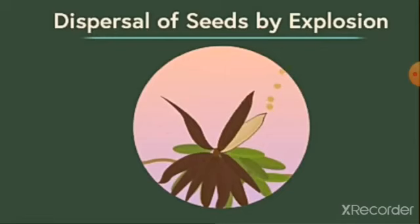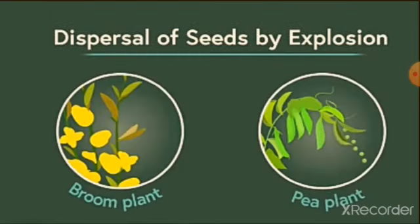The next type of dispersal is dispersal by explosion. In some cases, fruits or pods containing seeds burst open on their own. The pods dry and split open suddenly with considerable force which throws the seed at a distance. The examples are broom plant and pea plant.